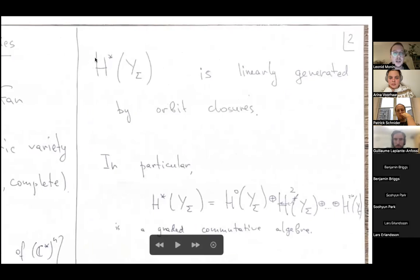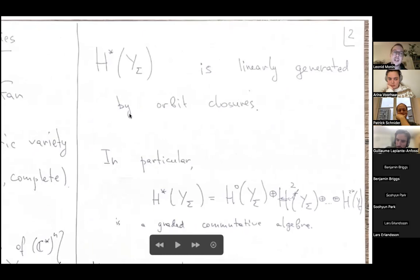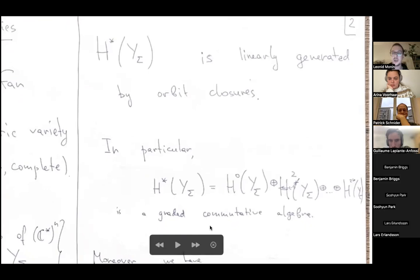In toric geometry there is a correspondence between cones of the fan and orbits of the toric variety, with dimension of cone equal to codimension of the orbit. In particular, the rays rho_1 through rho_r parameterize r invariant divisors. For a smooth toric variety, the cohomology ring is linearly generated by orbit closures, all of which are real even-dimensional submanifolds, so there are no odd cohomology classes.